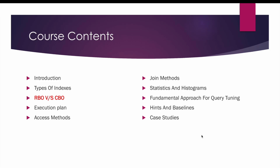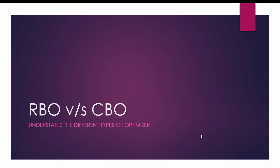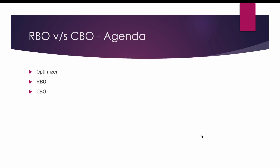Welcome to the next module on RBO vs CBO. In this module we are going to see the different types of optimizers: RBO, which is the rule-based optimizer, and CBO, which is the cost-based optimizer. We are going to see in detail what an optimizer does and what are the advantages of having a CBO over the RBO.